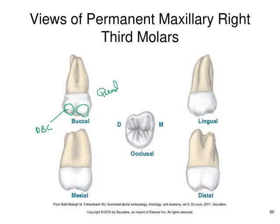The root morphology: it also has three roots like other maxillary molars, and these three roots are in close approximation or they may be fused together — partially or completely fused. On the occlusal surface, more supplemental grooves are present in both the heart-shaped and rhomboidal forms. The heart shape is the most commonly present, and the rhomboidal shape is also common.